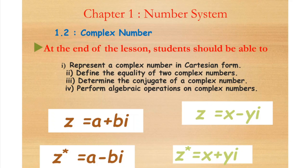Chapter 1: Number System. There are two types of numbers: real numbers and complex numbers. In lesson 1.2, we learn complex numbers. There are four learning outcomes of complex numbers as given below.